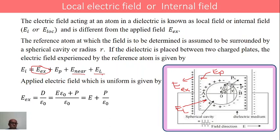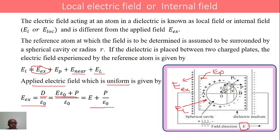Now studying one by one: the external electric field, otherwise known as the applied electric field, which will be uniform and is given by Ex equals D by ε₀, where D is called the displacement vector, otherwise known as the electric induction. D equals ε₀E plus P, where E is the applied field, ε₀ is the permittivity of free space, and P is the polarization of the dielectric material. Therefore, simplifying, we get Ex, the external electric field, equals E plus P by ε₀.